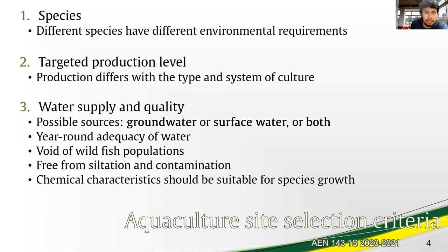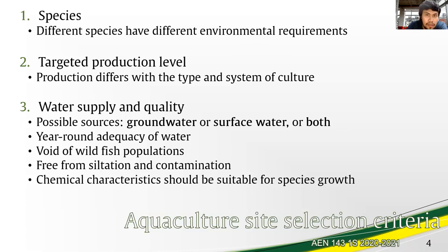Species and targeted production level have both been discussed previously. With targeted production level, the aquaculturist should be able to identify or decide on the type and system of culture: is it extensive, semi-intensive, or intensive? Will the species be grown in ponds, pens or cages, or more advanced systems like recirculating aquaculture systems (RAS)?